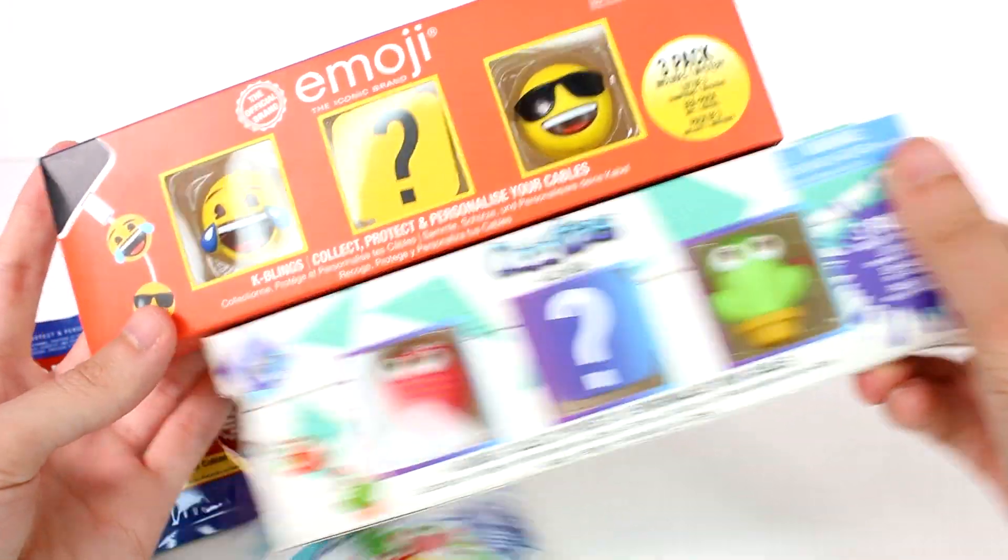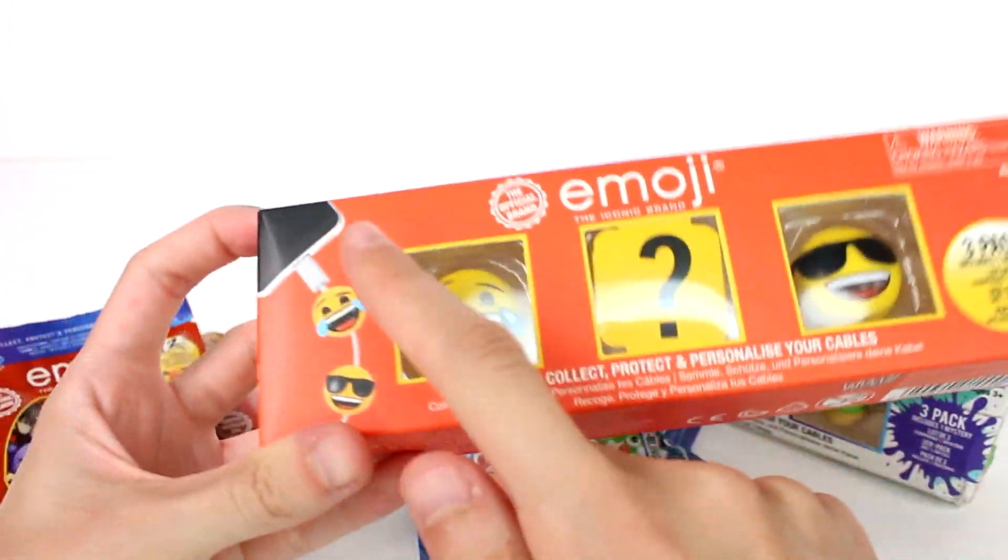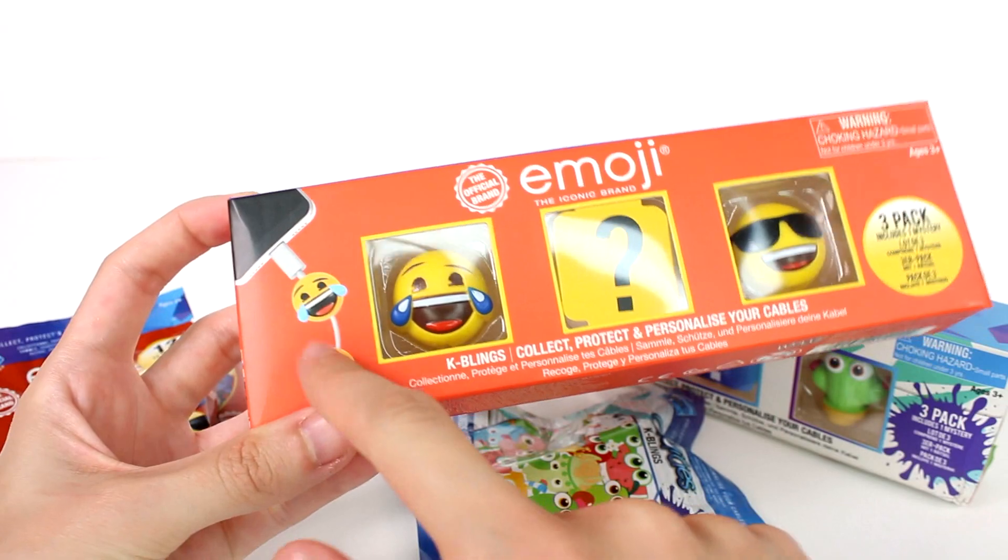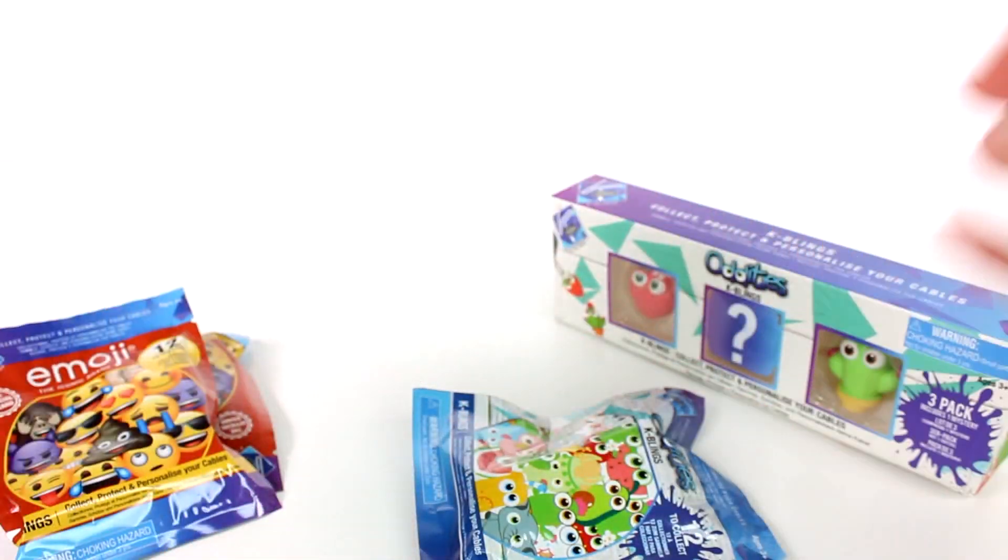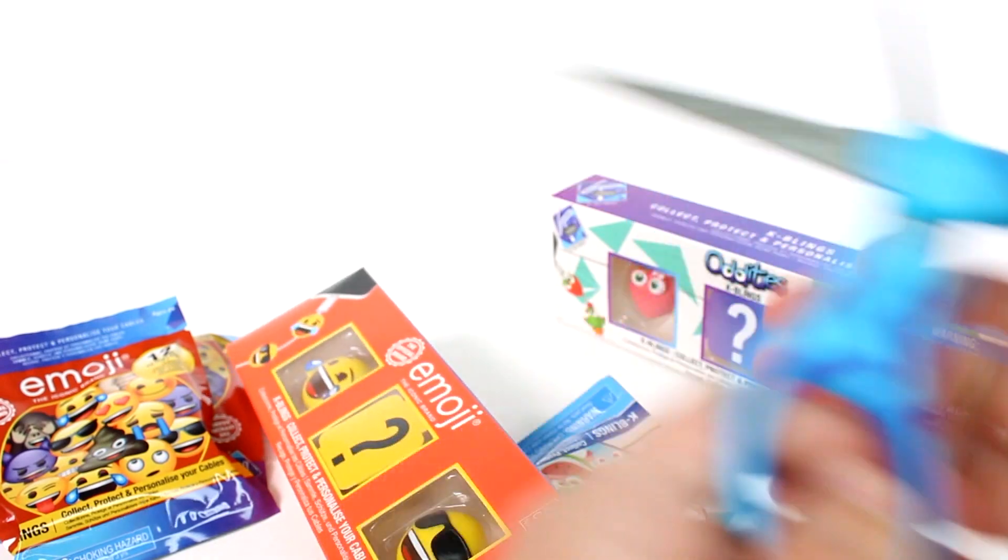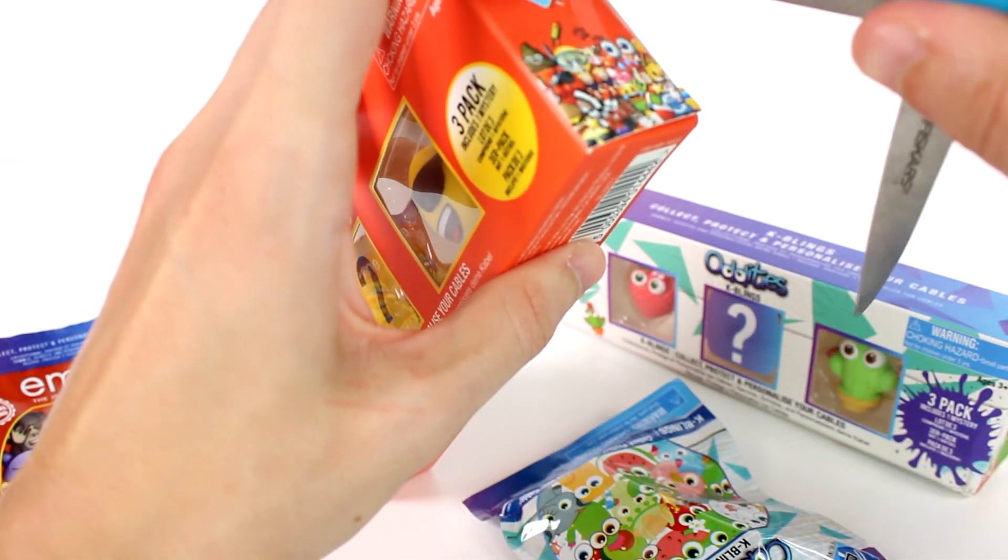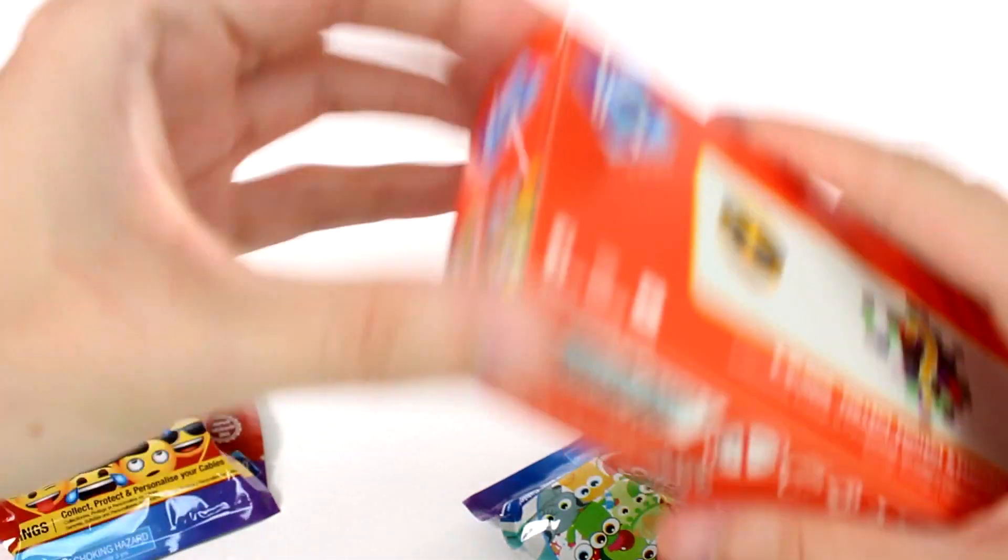You can see right here we have two visibles in each of these packs and then a mystery. For example, this helps protect your cables, which I need for sure. Let's get started. I'm gonna start with all of the emoji stuff and then we're gonna go to the oddities because I think I'm most excited for the oddities because they look the funniest.